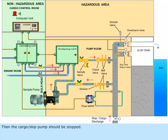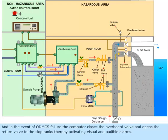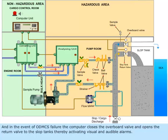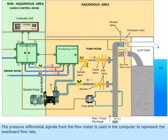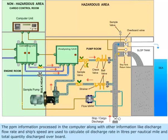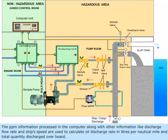The cargo or slop pump should then be stopped. In the event of ODMCS failure, the computer closes the overboard valve and opens the return valve to the slop tanks, thereby activating visual and audible alarms. The pressure differential signals from the flow meter are used in the computer to represent the overboard flow rate. The ppm information, along with discharge flow rate and ship speed, are used to calculate the oil discharge rate in liters per nautical mile and total quantity discharged overboard.